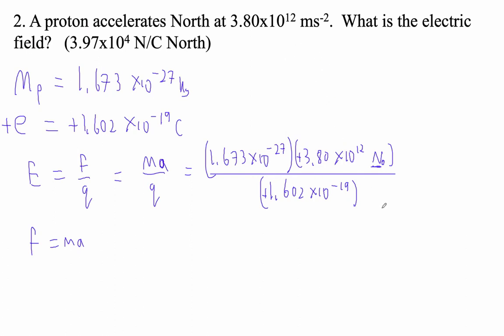Let's figure this out. 1.673 E minus 27 times 3.8 E 12 divided by 1.602 E minus 19. And I'm getting 3.97 times 10 to the 4th. And that's newtons per coulomb north.